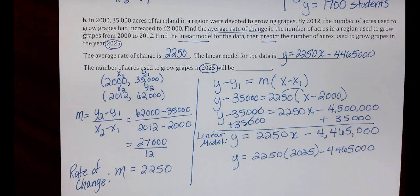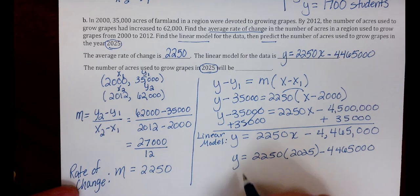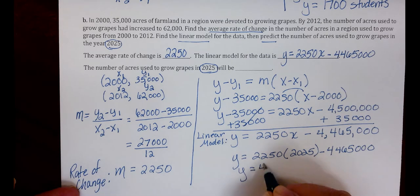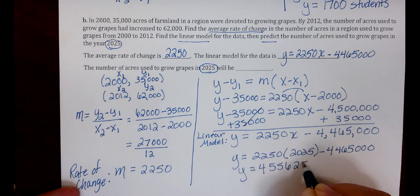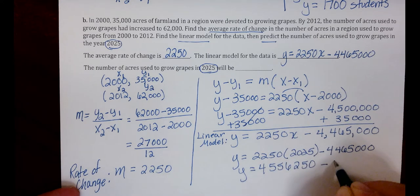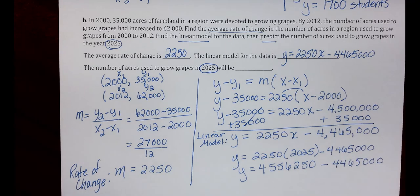If we do this calculation, we get Y equals 4,556,250 minus that 4,465,000, which gives us 91,250.